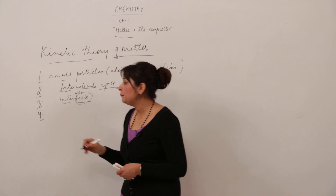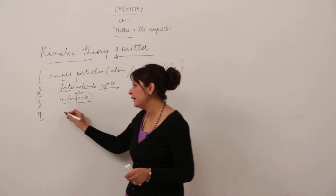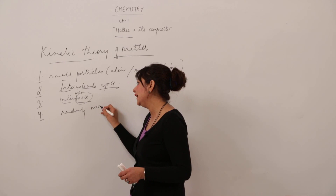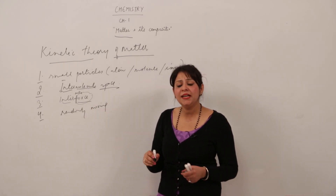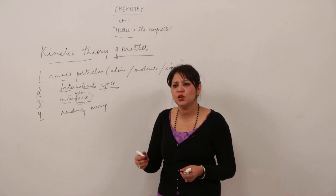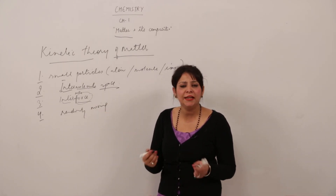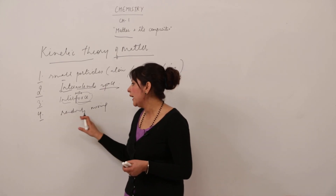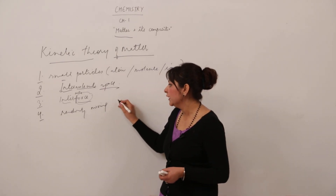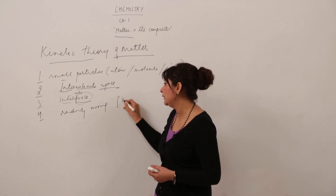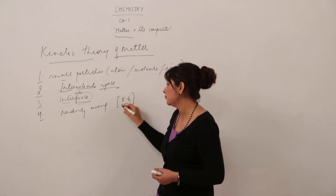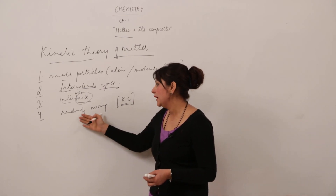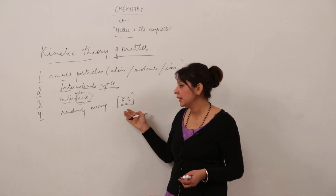Moreover, the particles are not stationary — they are randomly moving. Randomly means in any direction, any kind of motion they can possess: vibratory, oscillatory, any, depending upon the space where they can move around. So they are randomly moving, and we know that particles which are in motion possess kinetic energy. So we say the particles possess kinetic energy.